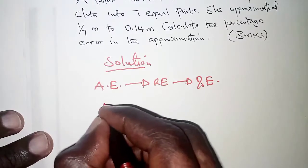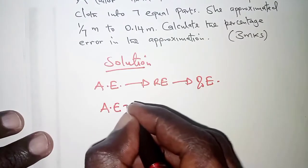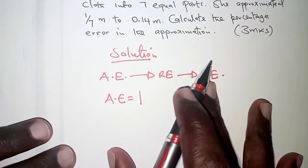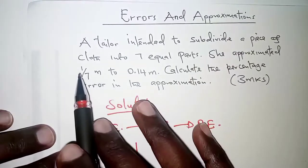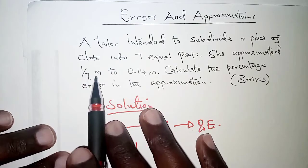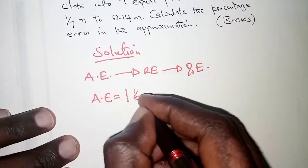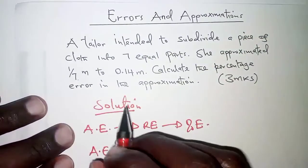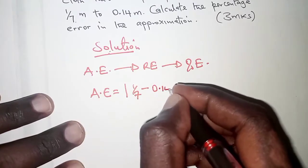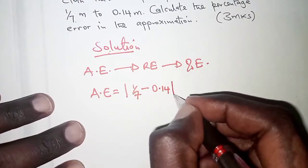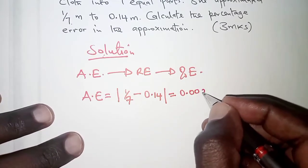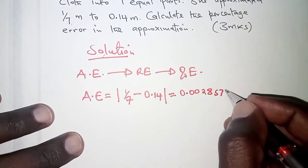The first thing therefore, absolute error is obtained as we check the difference between the estimated value and the exact value. What is expected is 1 over 7. So you take 1 meter divided by 7 equal parts. So we have 1 over 7, but this was approximated as 0.14. So we subtract 0.14. What you are going to get is 0.00285714.